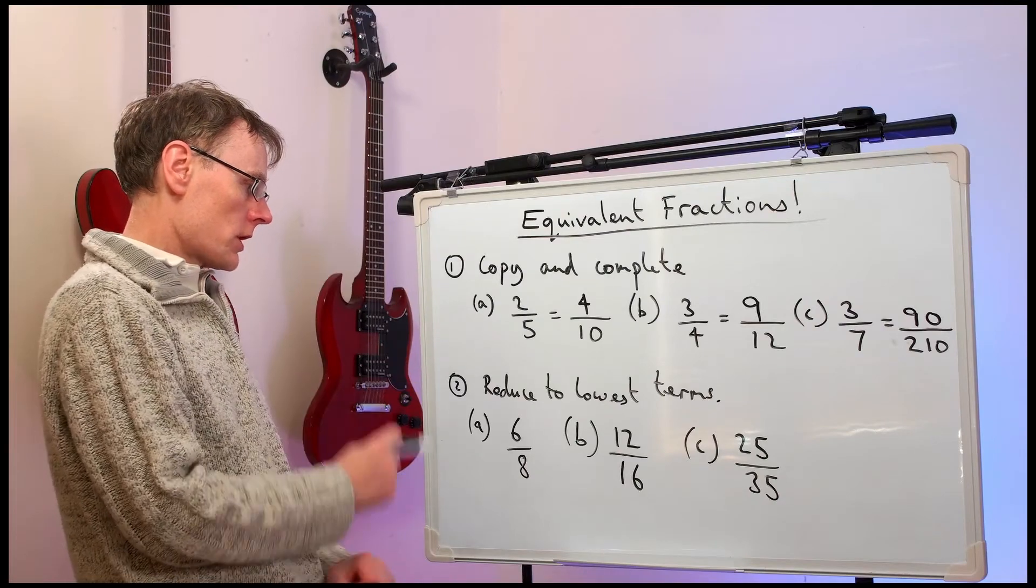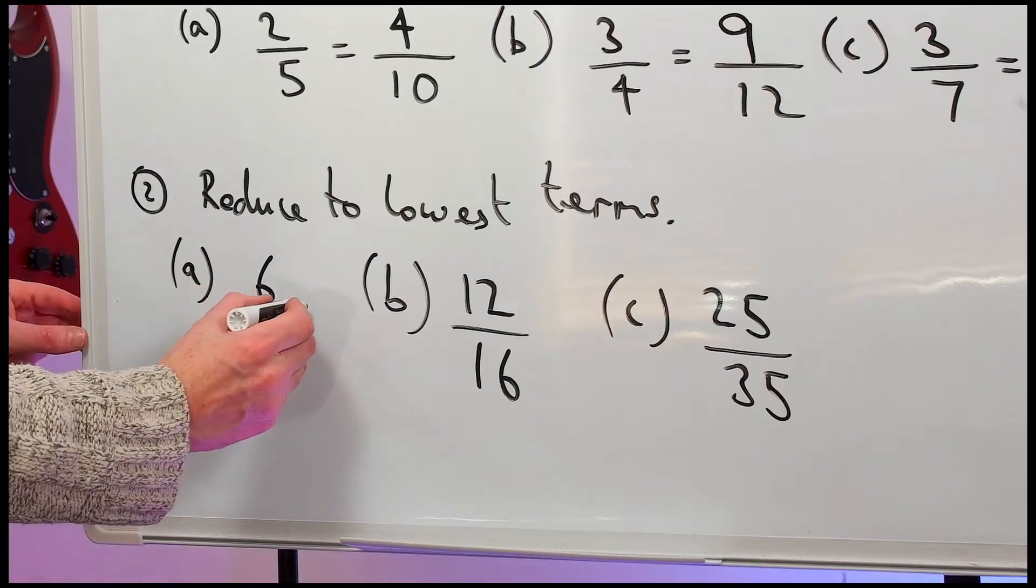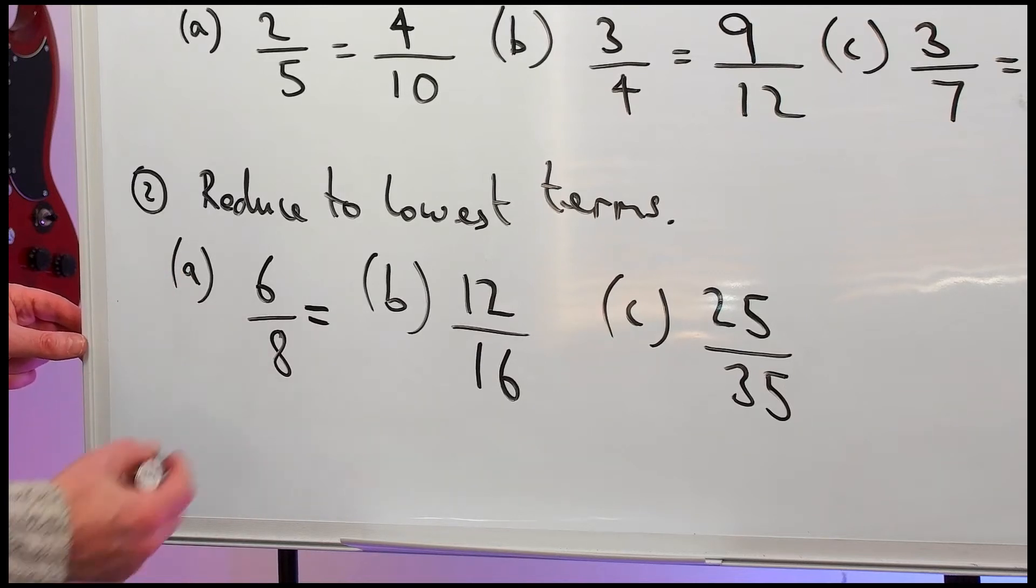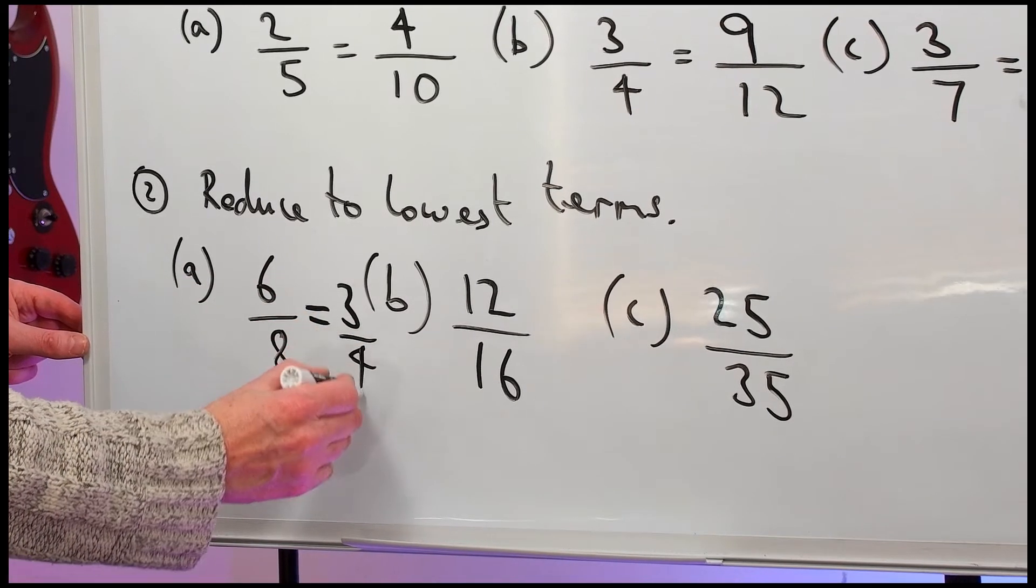Now, number two. Reduce to lowest terms. Six-eighths. Here we can divide the top and bottom by two. So we get three-quarters.